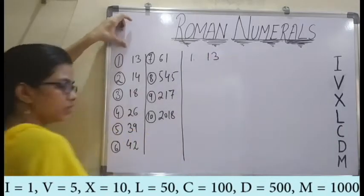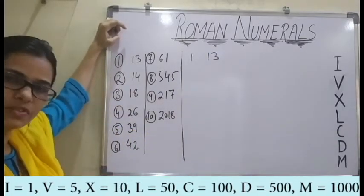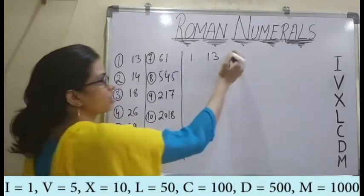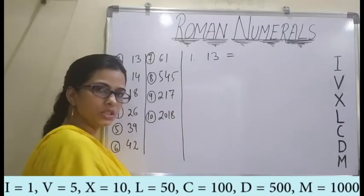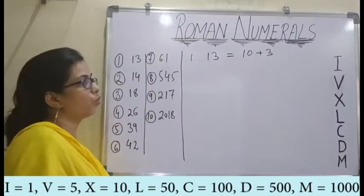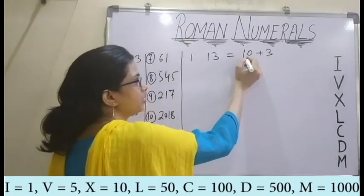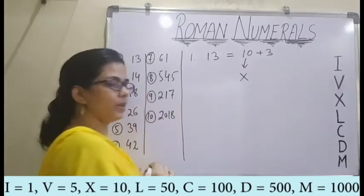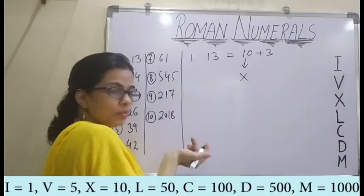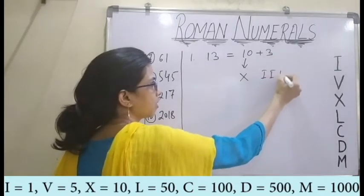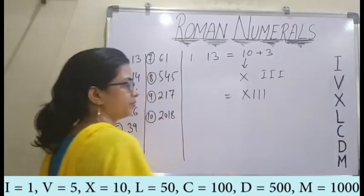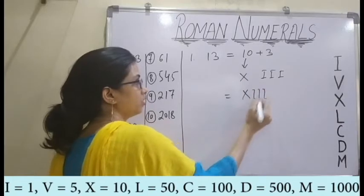First question: we have the number 13. The best way to convert into Roman numerals is to write the number in expanded form. So the expanded form of 13 is 10 plus 3. The value of 10 is simply X. And the value of 3 in Roman numeral is three I's. So my actual answer is XIII.